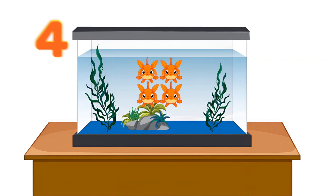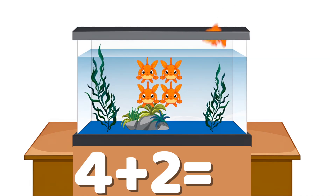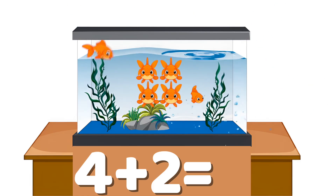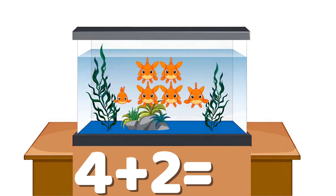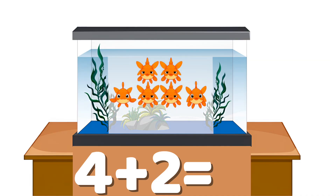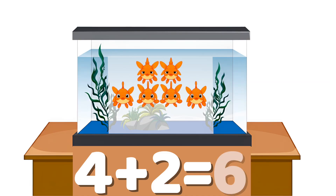Example number four: four plus two. Four fish are in the tank. Two more fish swim in. Count them: one, two, three, four, five, six. Four plus two equals six.